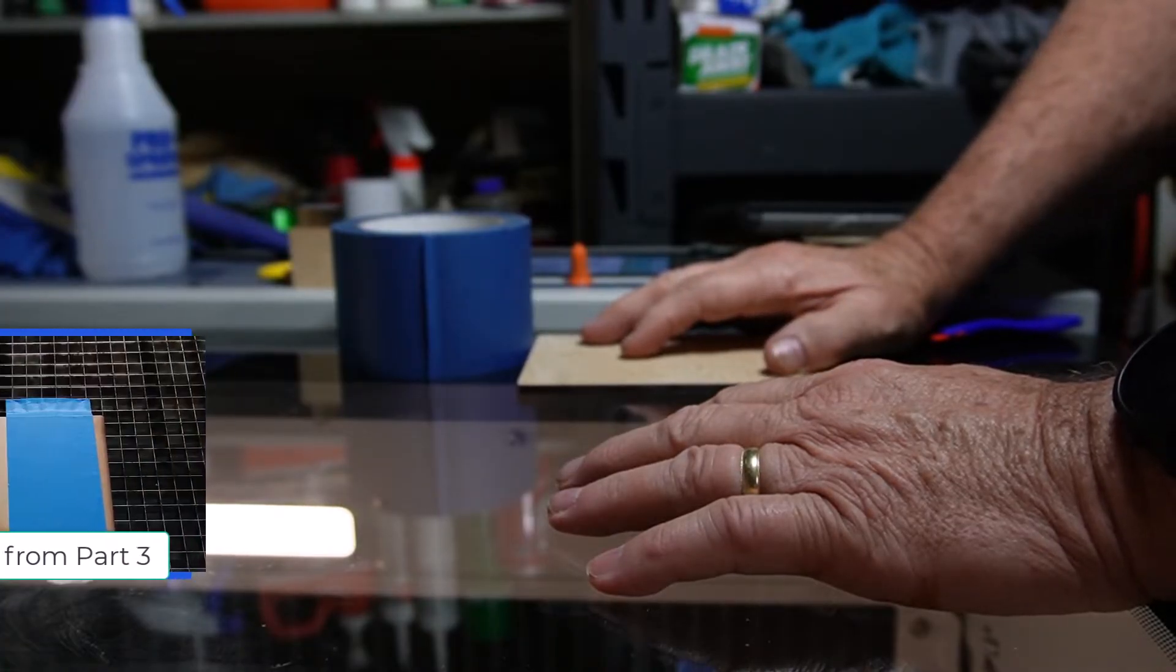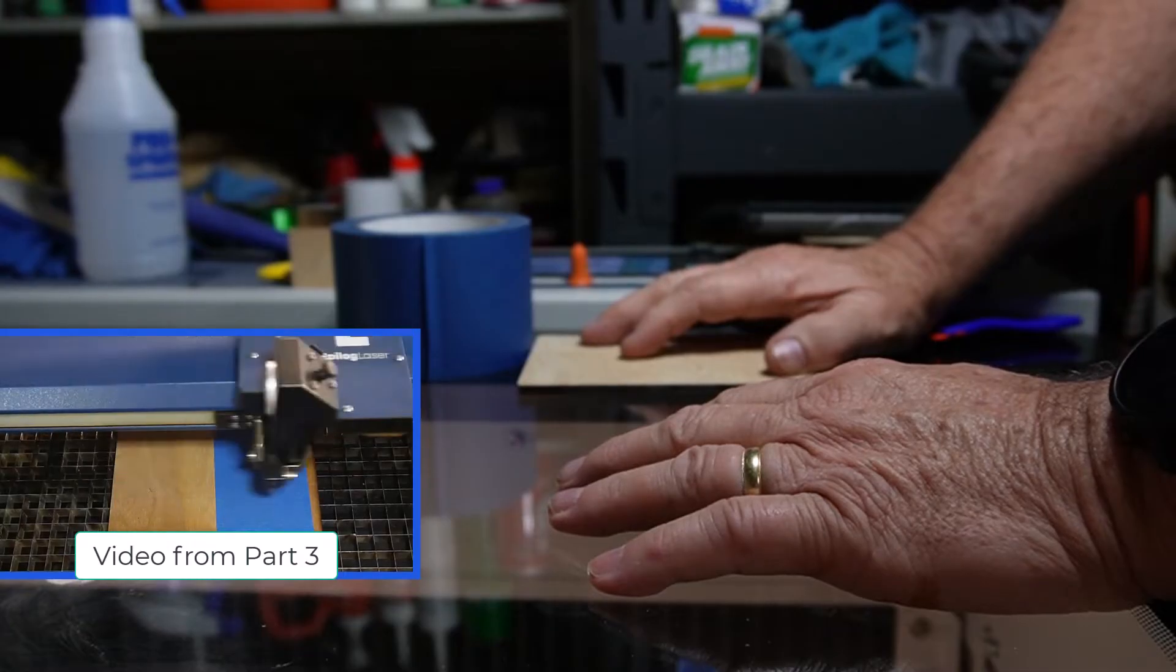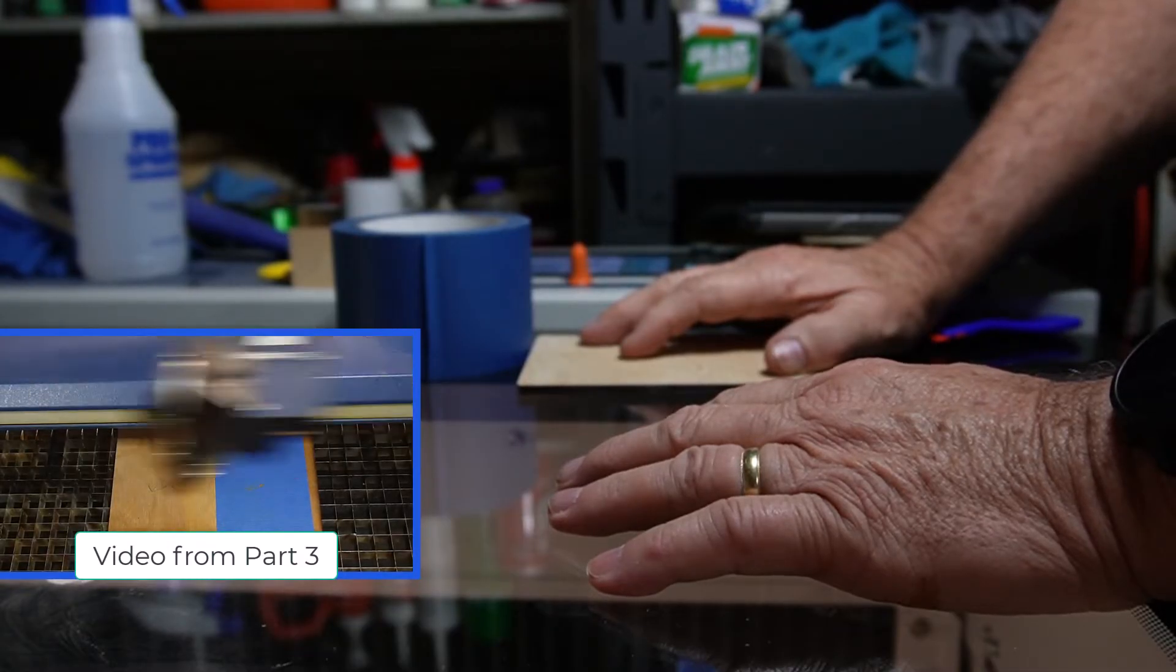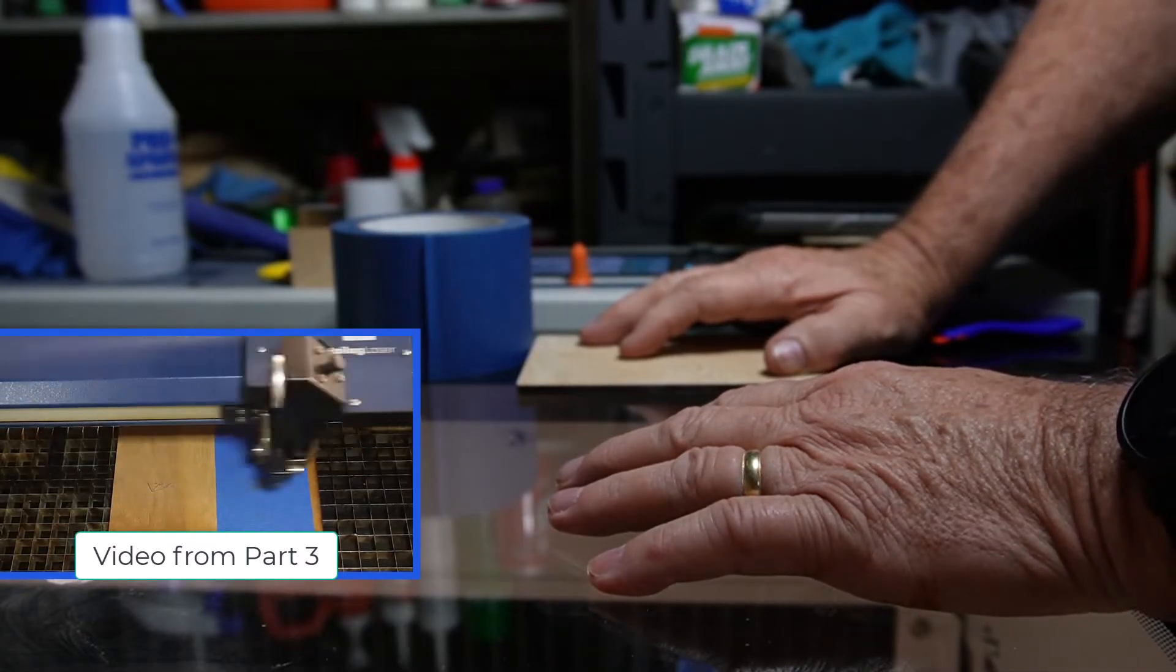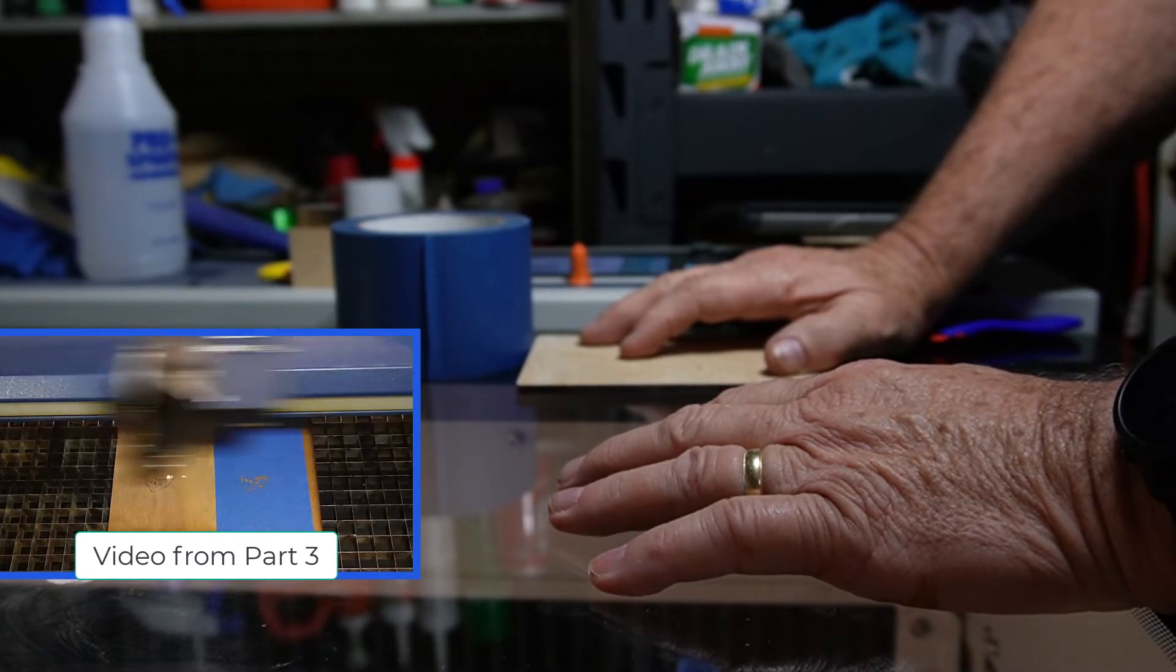In part three, we talked about using painter's tape for masking by taping the wood, burning the design through the tape into the wood, painting it or filling it with epoxy, then peeling off the tape to reveal your painted engraving.